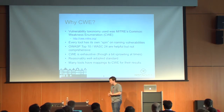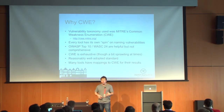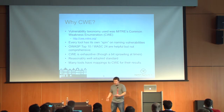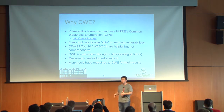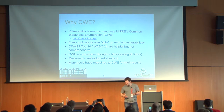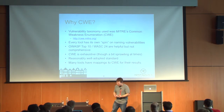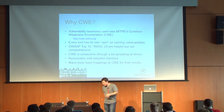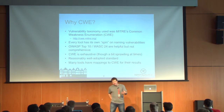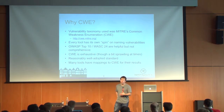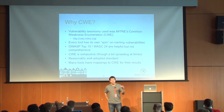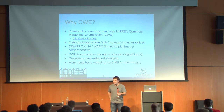We also normalized all of our vulnerability type data back to CWE. I think the quote from Winston Churchill was, 'Democracy is the worst form of government except for all the other ones.' CWE is frustrating — it may be the world's worst vulnerability taxonomy except for all the other ones. But I've actually grown to like CWE through use. From a vulnerability type standpoint, that's what we normalized everything back to from the different tools that were used, as well as a manual assessment.